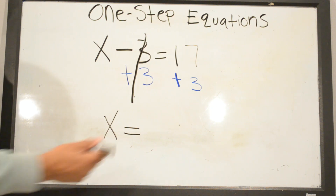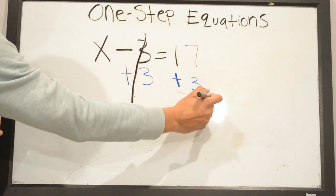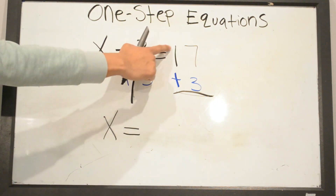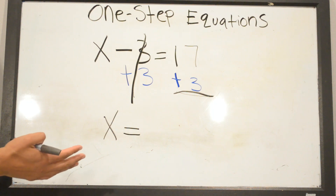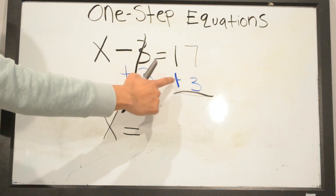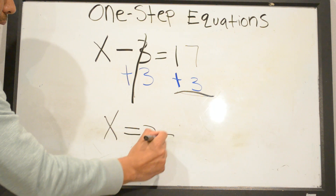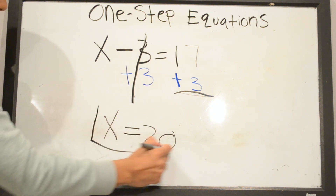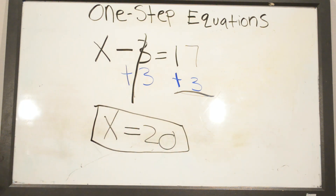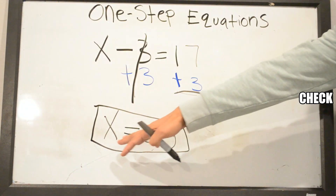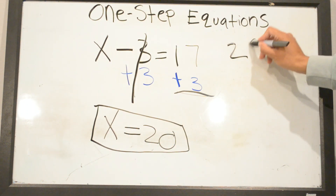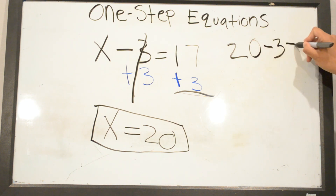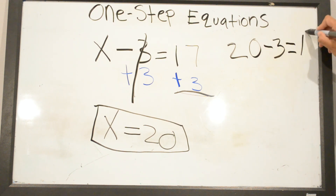Since we have two positives — 17 and 3 — we're just going to add. 17 plus 3 is 20, so X equals 20. To check your work, plug 20 in for X: 20 minus 3 equals 17.